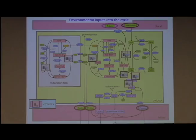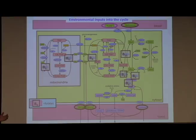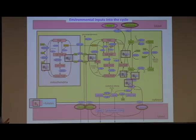It's called one carbon metabolism because the system takes in amino acids from the environment, takes them into the mitochondria, strips the amino acids into methyl groups that are then exported to the cytosol and used to manufacture other molecules. The environmental inputs into the cycle are the amino acids, which just come from eating, and the B vitamins are cofactors for almost a dozen enzymes in this cycle. So vitamin deficiencies have a big effect.